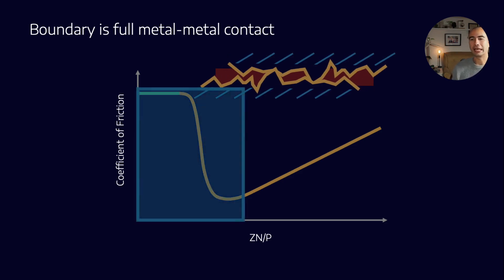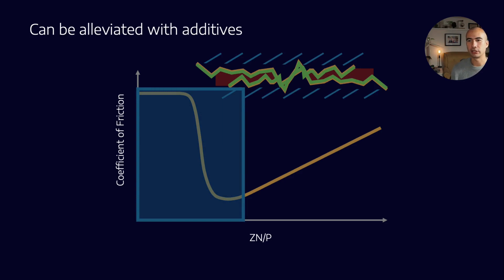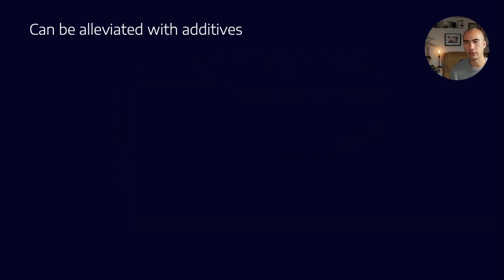Now we can alleviate some of this situation with additives, right? And so this is where some of the anti-wear additives come in. Now, what kind of anti-wear additives are there? Well, there's a bit of a mix, but we can break them up into two large groups. One is solid lubricants and the other is reactive additives.